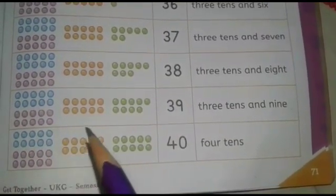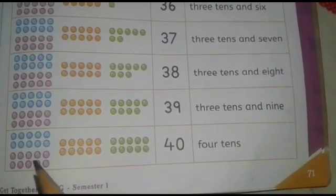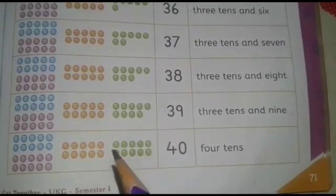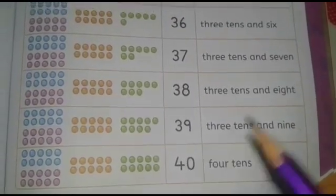Here 4 tens are there. See 1 tens, 2 tens, 3 tens, 4 tens, is it? Yes. 4 tens is 40.